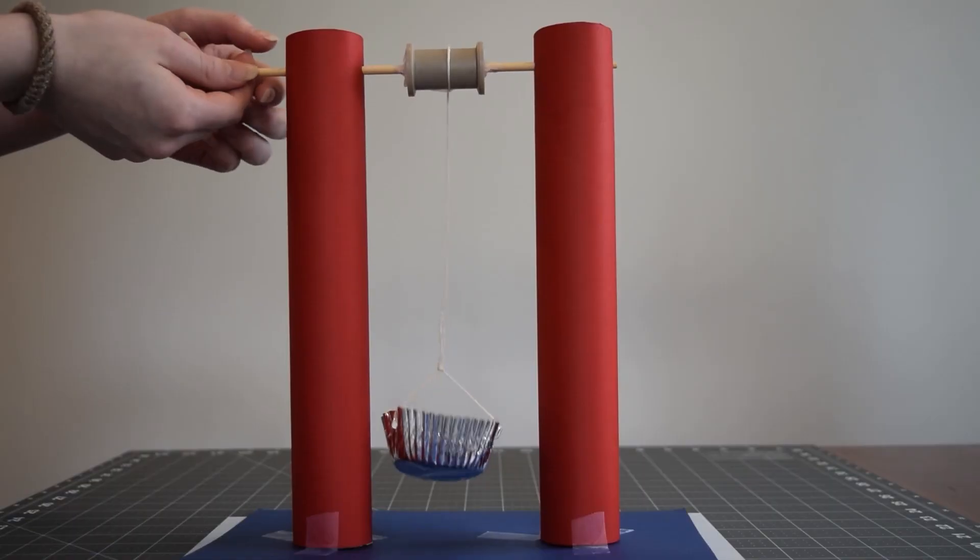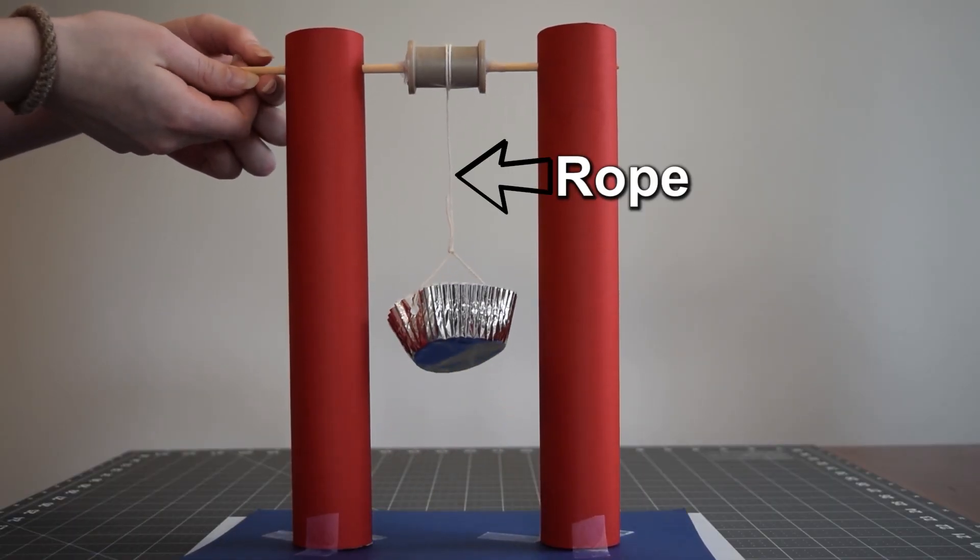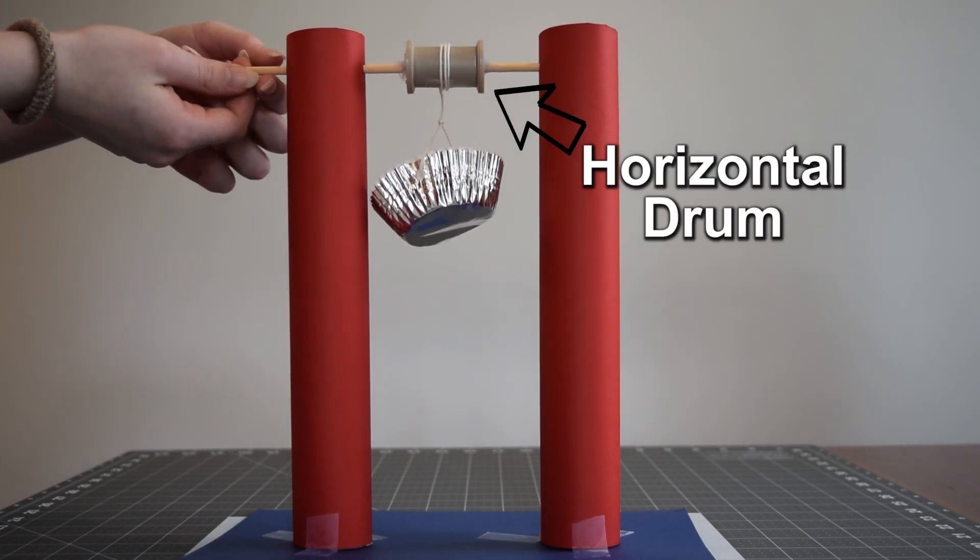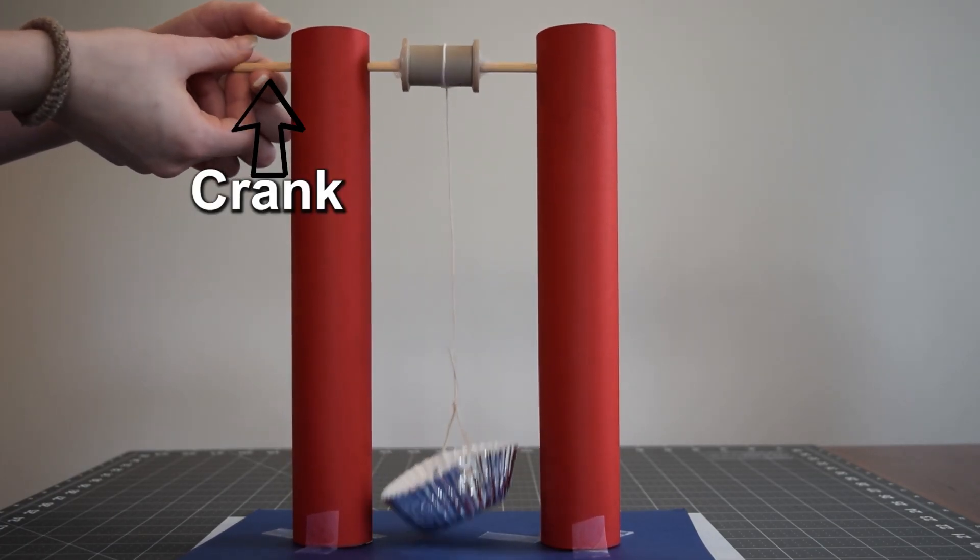A winch is a hauling or lifting device consisting of a rope, cable, or chain winding around a horizontal rotating drum turned by a crank or motor.